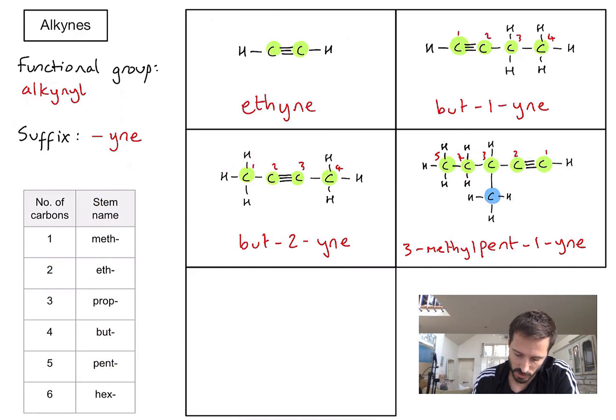Final one, a bit trickier yet again. What makes this tricky? Well, I've actually got two of my functional group in there. I've got two triple bonds. Let's go through the same process. First of all, I've got one, two, three, four carbons. Four relates to the stem name of bute. So we can write that down.